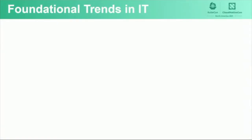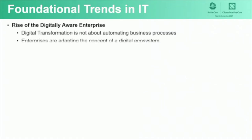Let's start with some foundational trends we are seeing across the IT spectrum, starting with the shift in thinking when creating or transforming business initiatives. Digital disruption and digital transformation have been topics for some time, but we are seeing an acceleration of enterprises shifting their business innovation strategies to embrace the concept of being digitally aware. Enterprises are adopting the concept of a digital ecosystem where the automation of business processes may be disaggregated and extend beyond the enterprise into third parties, including suppliers, partners, customers, and competitors.